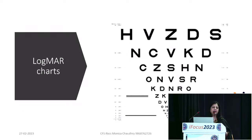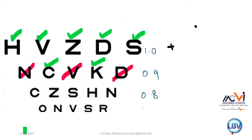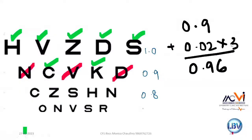On LogMAR/ETDRS charts: there are five letters per line, equal spacing between letters and between lines, and each letter is worth 0.02 LogMAR units. The chart starts at 1.0 (equivalent to 6/60) and goes down to 0 (equivalent to 6/6). To score: take the line value and add 0.02 for every missed letter — for example, if a patient reads the 0.9 line but misses three letters, the score is 0.9 + (0.02 × 3) = 0.96.